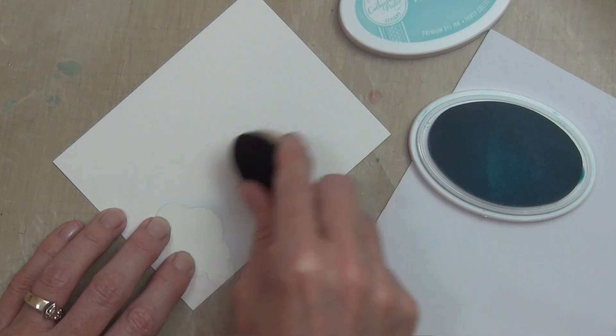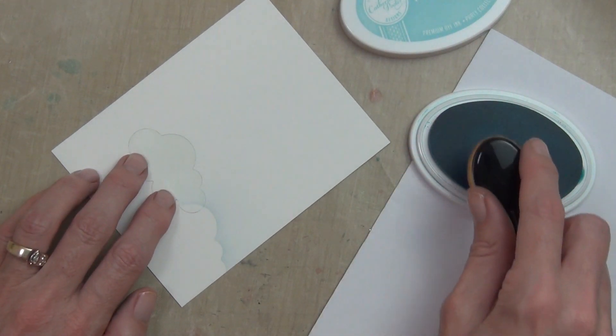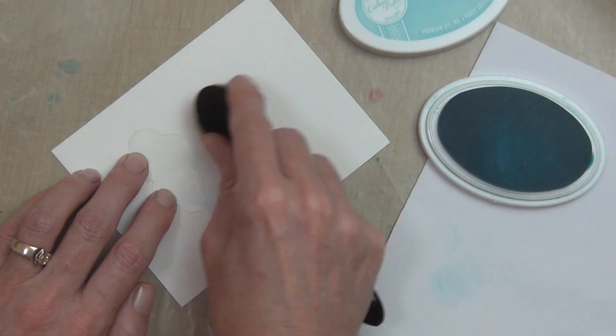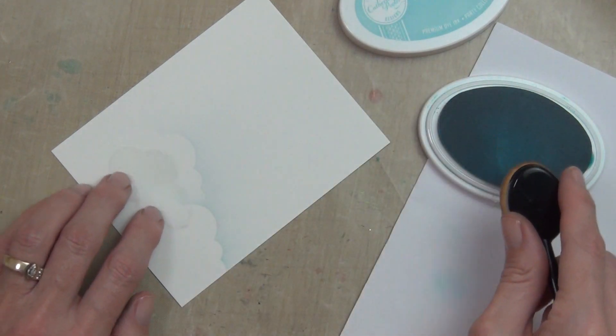I'm using my life-changing blender brushes, working my way from the base of the cardstock towards the top. As I'm going from bottom to top, I'm actually making my clouds a little bit darker as well.